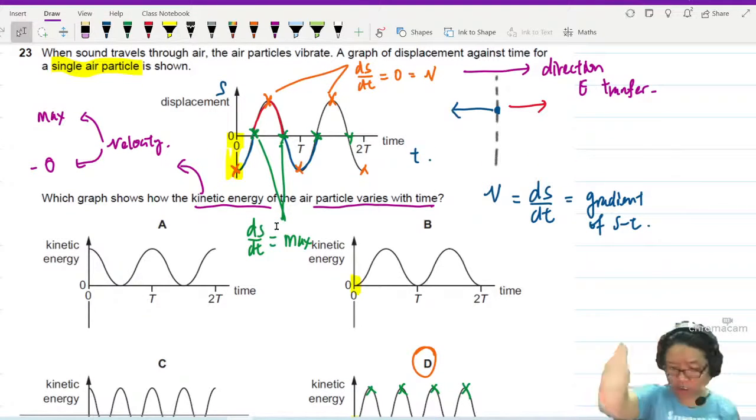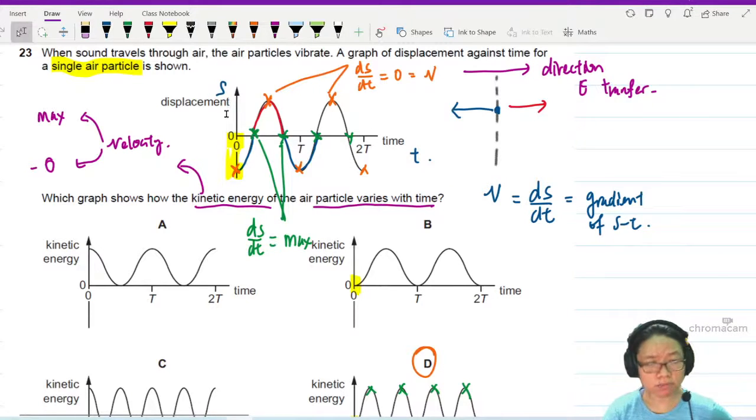Unless you have learned simple harmonic motion, oscillation, then you've got other tools to use. But if you don't have, use the gradient. The displacement of the particle, you want to know kinetic energy, you seek velocity. You want to know velocity from a displacement time graph, seek the gradient. Look at the behavior of the gradient.